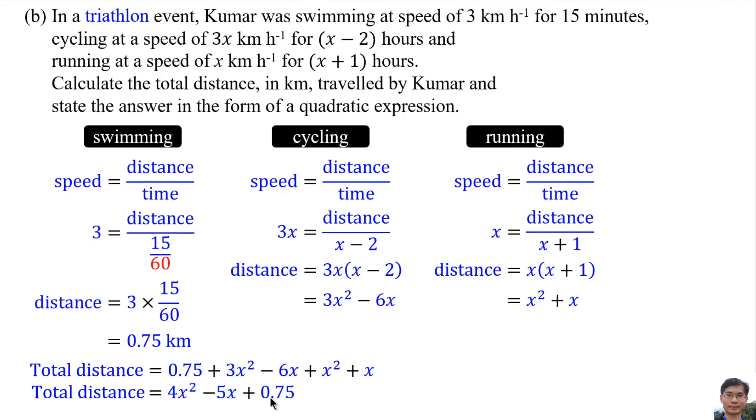Total distance means we find the sum of these three distances. This is the answer. The answer is recommended to write in general form of quadratic expression.